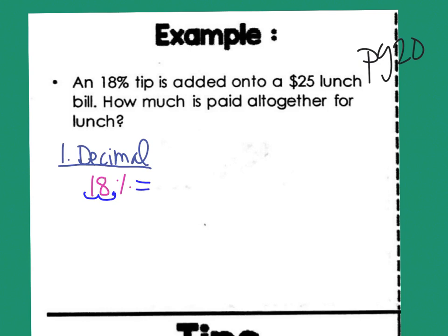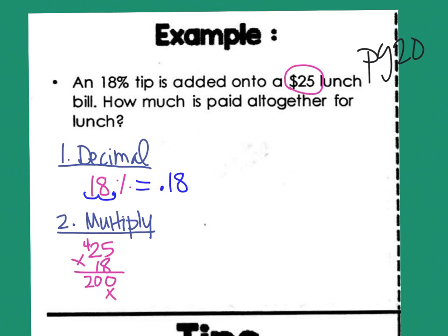Then step two was multiply with the original number. The original number is 25, so I'm going to do 25 times .18. And 8 times 5 is 40, 8 times 2 is 16 plus 4 is 20. I'm going to put in a placeholder spot, and then multiply 1 times 5 and 1 times 2. And then when I add those together, I'll get 0, 5, and 4.